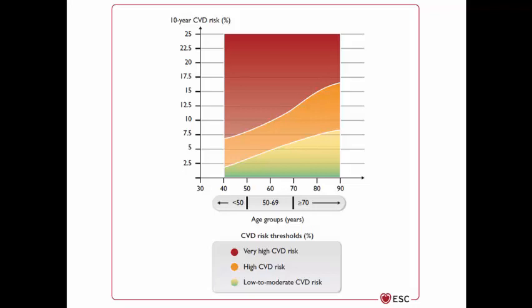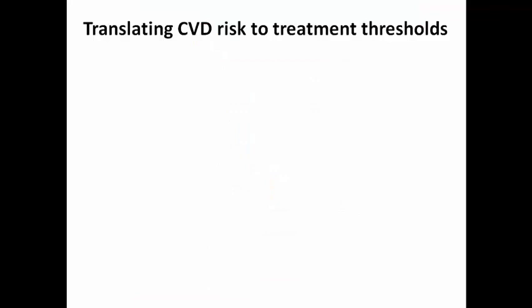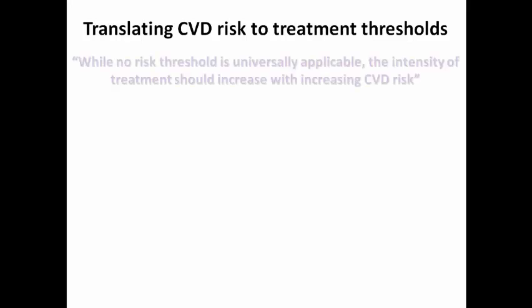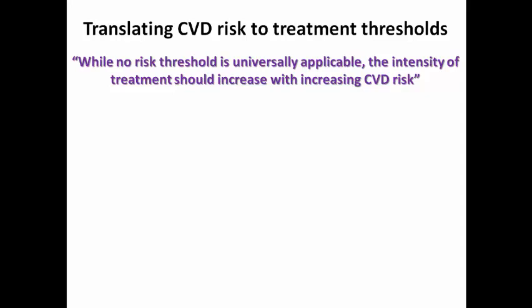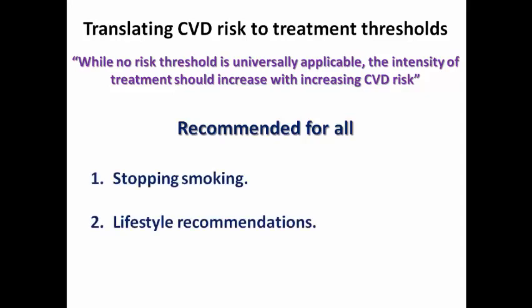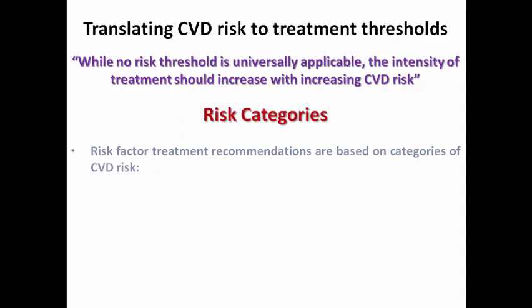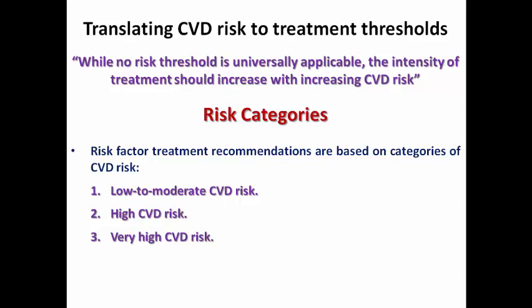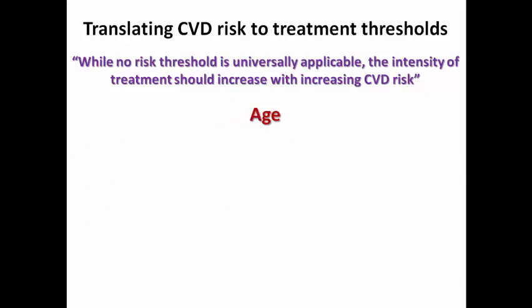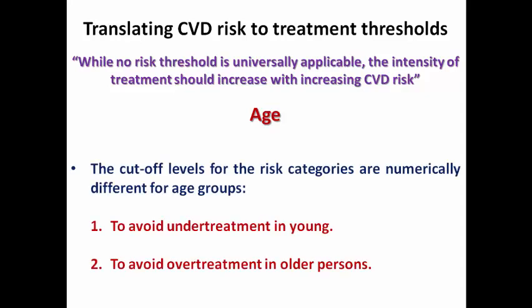The second step is to translate the calculated cardiovascular risk into treatment thresholds. There is no universally applicable risk threshold, and the intensity of treatment should increase with increasing cardiovascular risk. Prevention goals are recommended for all — stopping smoking, lifestyle advice on diet and exercise, and a target systolic blood pressure below 160 mmHg in general, with lower targets when treatment interventions are applied. Risk categories are divided into low-to-moderate, high, and very high cardiovascular risk. Because age is the major driver of risk, cut-off points are numerically different across age groups to avoid under-treatment in the young and over-treatment in older persons.